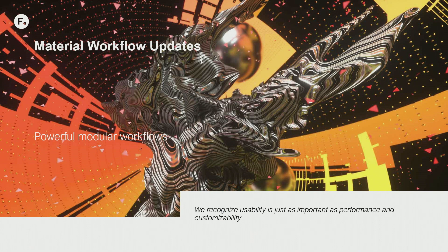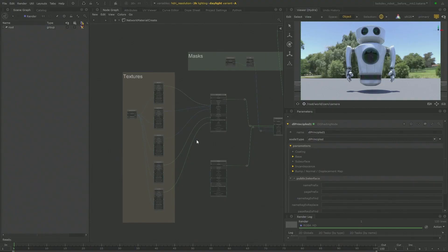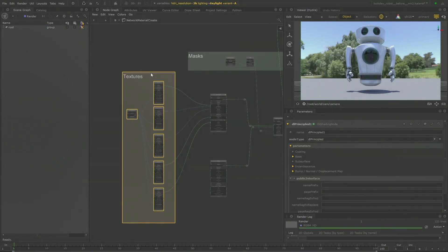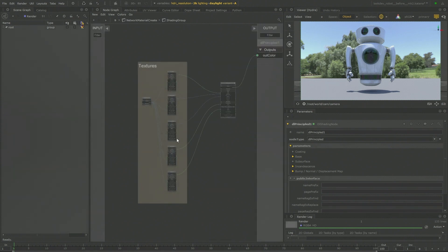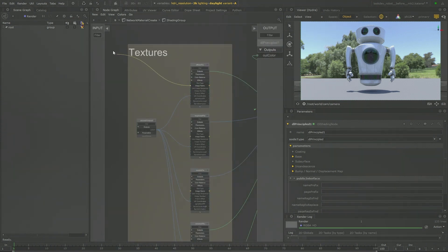We've also included more work on the material workflow. In Katana 3.2, which we didn't have a chance to come talk with you guys about, we overhauled the shading networks. These were something that were long due, like the viewer, for an update. What we did was make them into a monolithic node — basically a node network within a node. This has gone over incredibly well. You've gone from basically these clunky little nodes to these really nice, elegant left-to-right nodes.